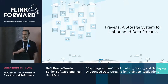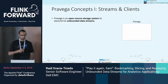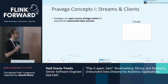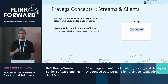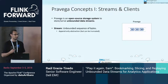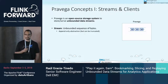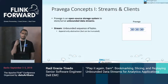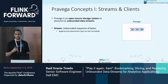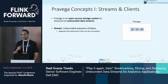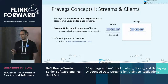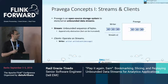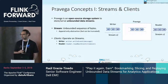Let me start introducing Pravega as a storage system. Pravega is an open source storage system for storing and serving unbounded data streams. The most basic definition of a Pravega stream is an unbounded sequence of data events. Pravega streams are append-only — they can be truncated, but events cannot be modified. In Pravega we have clients: writers that write events to a stream and readers that consume events.